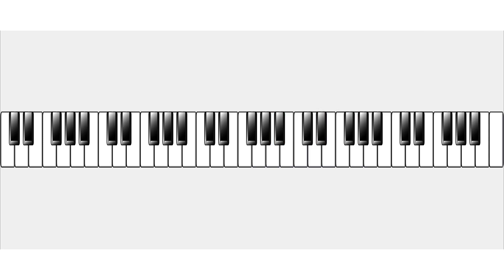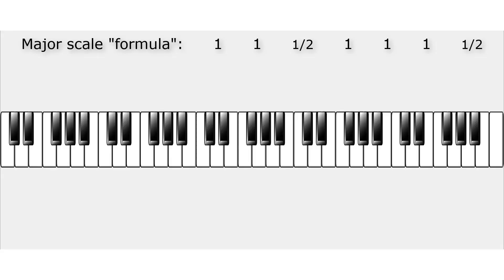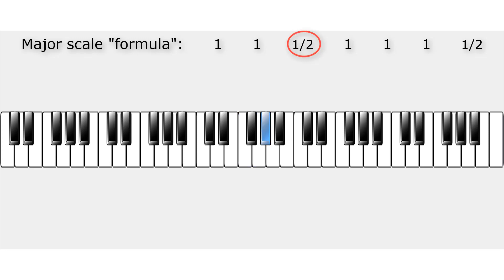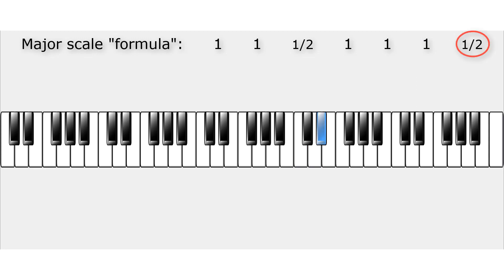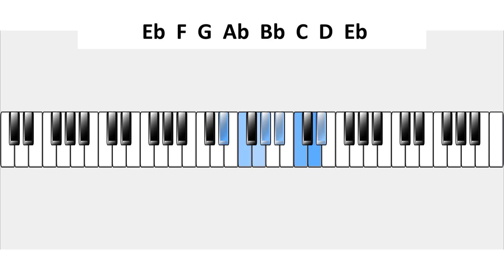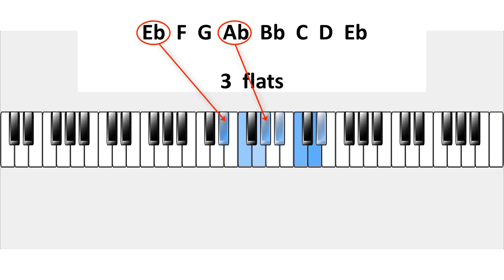Let's try one last major scale: E-flat major. Again applying the formula — one, one, a half, one, one, one, a half — starting on E-flat. One whole tone up to F, again one up to G, a half up to A-flat, one up to B-flat, one up to C, again one up to D, and finally a half up to E-flat. This is the E-flat major scale. You can see that E-flat has three different flat notes: E-flat, A-flat and B-flat.